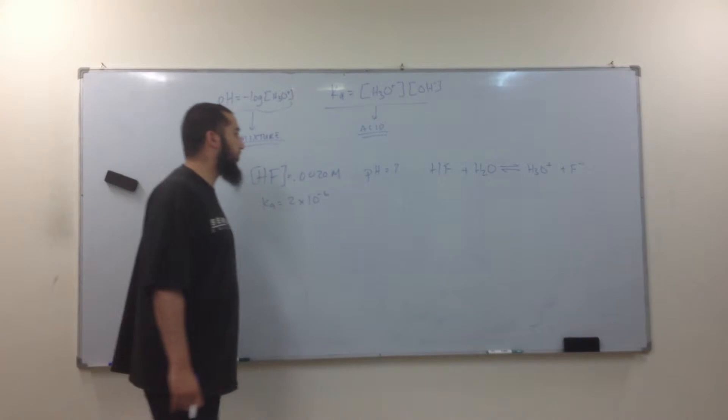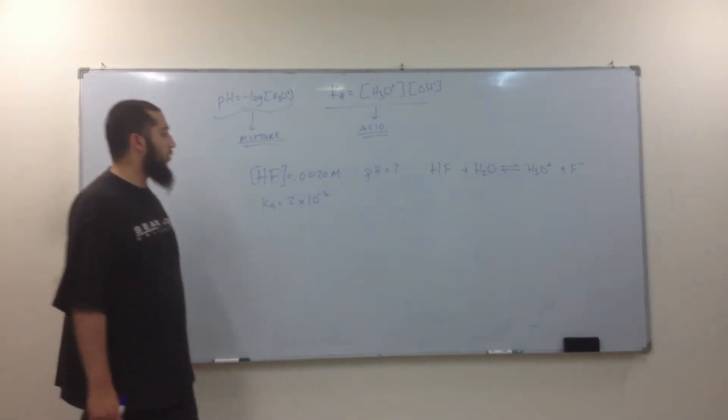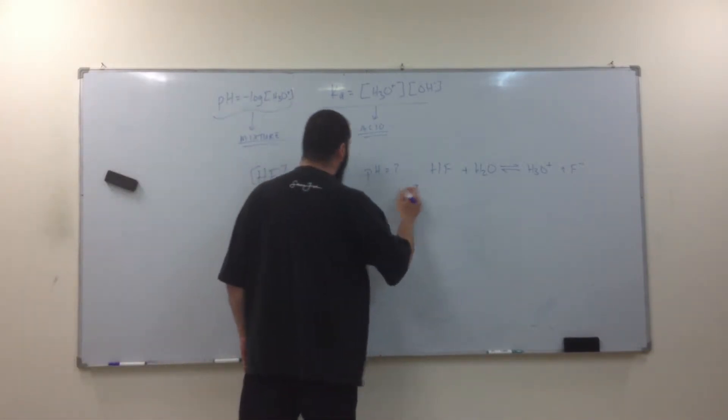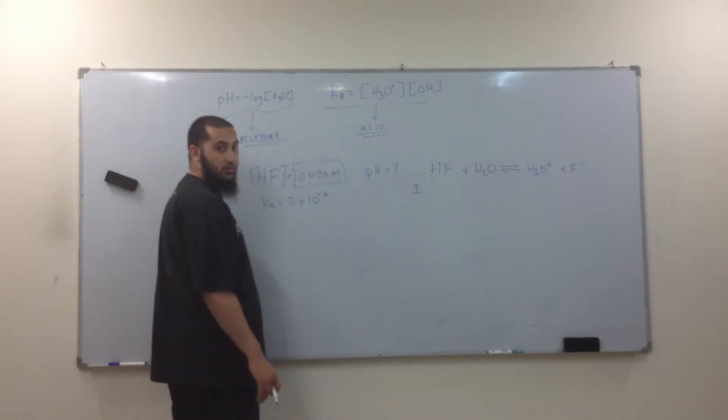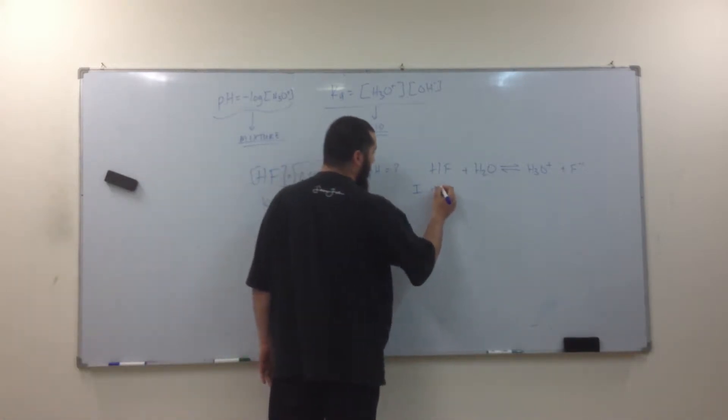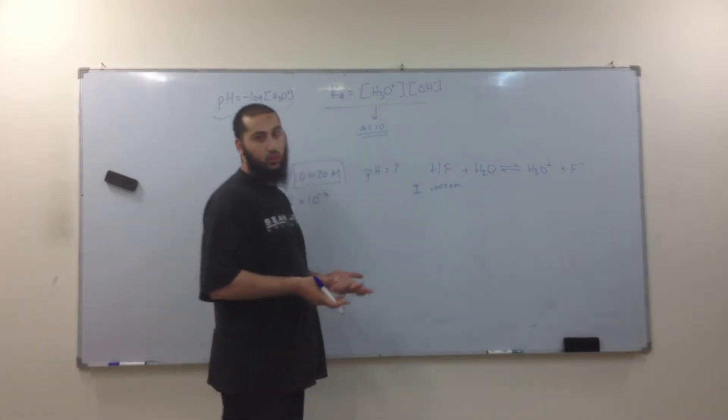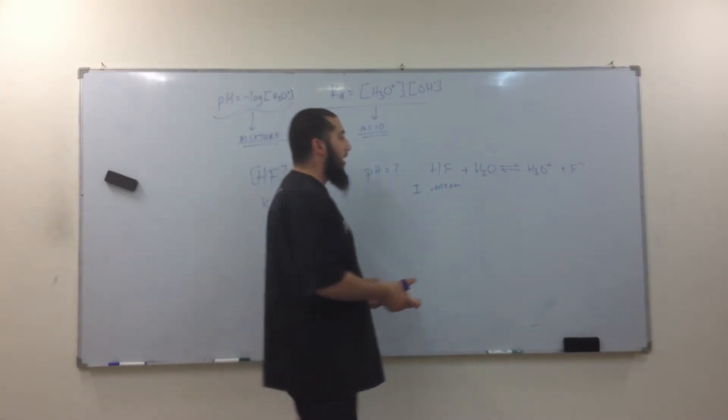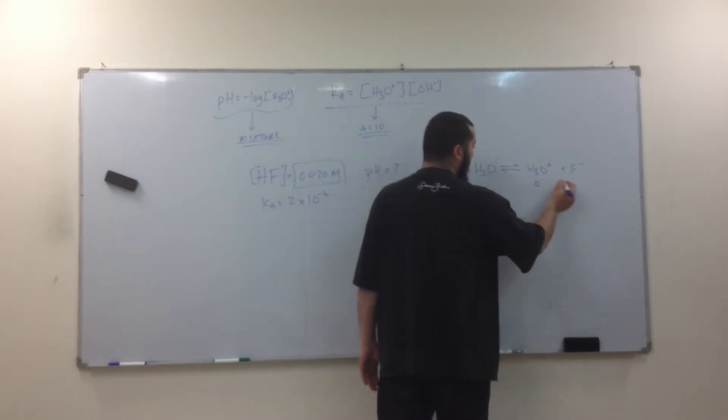So what's my initial? What's my HF? They gave it to us. 0.0020. How about my water? We skip it because it's liquid. Nobody can pay attention to that. How about my H3O? Zero and zero.